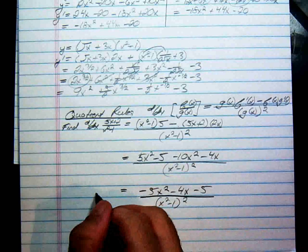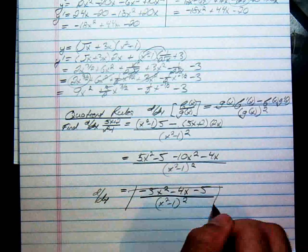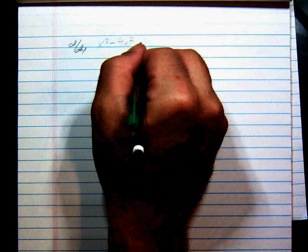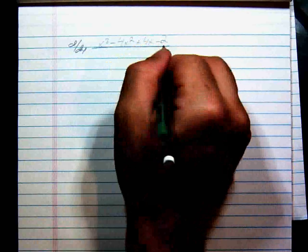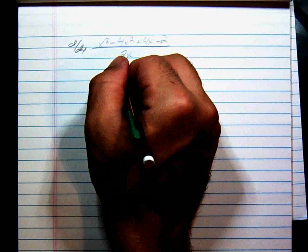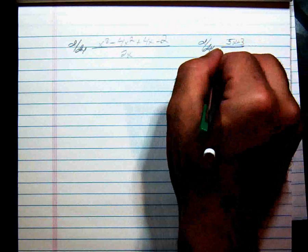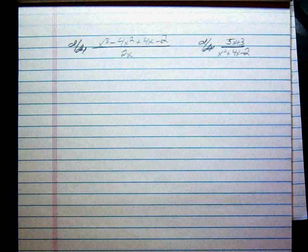There's your derivative. Let me give you two more problems to try. First: find the derivative of x cubed minus 4x squared plus 4x minus 2, all over 2x. Second: find the derivative of 5x plus 3 over x squared plus 4x minus 2. Go ahead and pause and try them, and I'll come back and work through them.